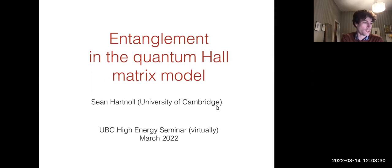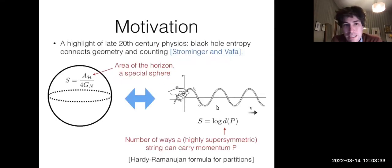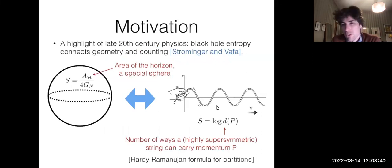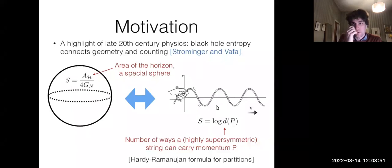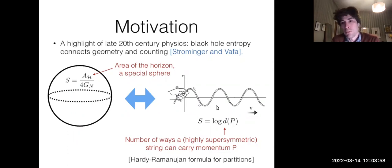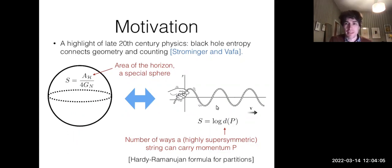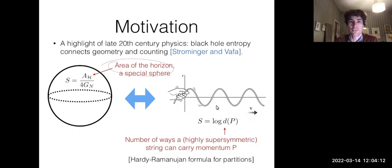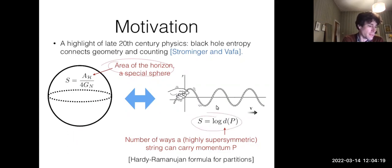I'll talk about entanglement in the quantum Hall matrix model, which I'll introduce shortly. I'm going to start with a few big picture things — probably quite well known to this audience, but I'll go through them quickly. Many great things happened last century in the theoretical realm. A cool thing near the end was the Strominger-Vafa result, which matched black hole entropy with a counting problem in certain highly supersymmetric cases.